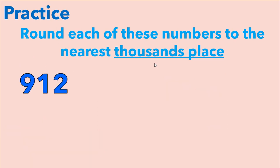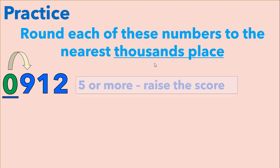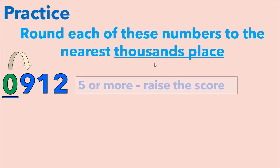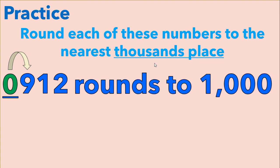Finally, we're going to round these numbers to the thousands place. In nine hundred twelve, we see that we have no thousands, so we can put a zero in the thousands place. We're going to look at the hundreds place to determine if we're going to round this number to zero or to one thousand. The nine falls in the category of five or more, so we're going to raise the zero thousands to one thousand. Nine hundred twelve rounds to one thousand.